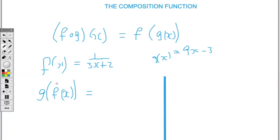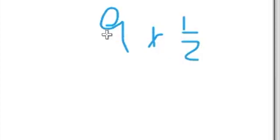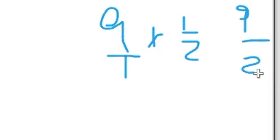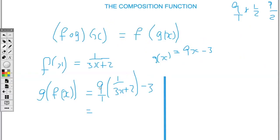So for g(f(x)), we're going to substitute the function f into g. So where I see the x right here, I'm going to replace it with 1 over (3x plus 2), close bracket, minus 3. So multiplying — we put 9 over 1, then 9 times 1 gives me 9, and 1 times (3x plus 2) gives me 3x plus 2, take away 3.